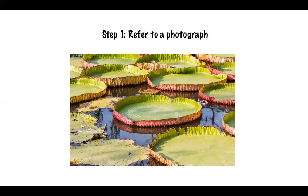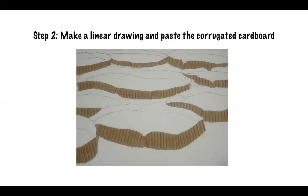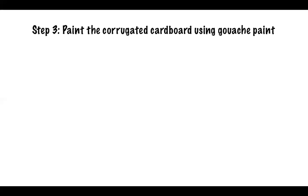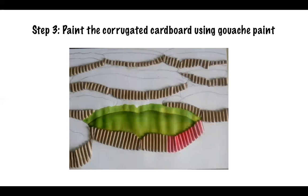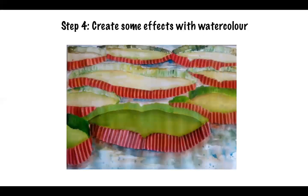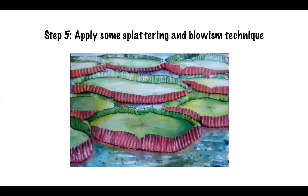Step 1: Refer to a photograph. Step 2: Make a linear drawing and paste the corrugated cardboard. Step 3: Paint the cardboard using gouache paint. Step 4: Create some effects with watercolour. Step 5: Apply some splattering and blossom technique.